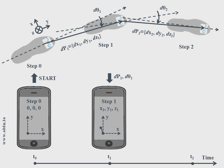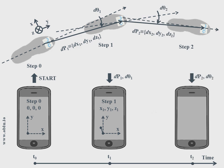Similarly, DP2 and D-Theta2 are transmitted at the next detected step to construct the path.